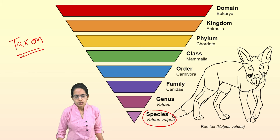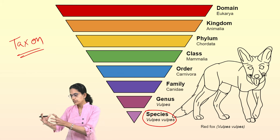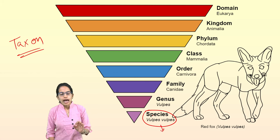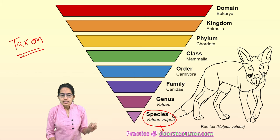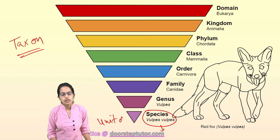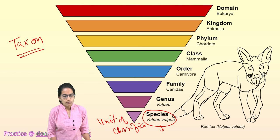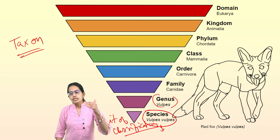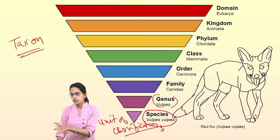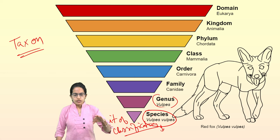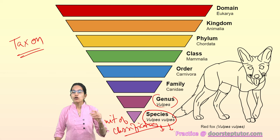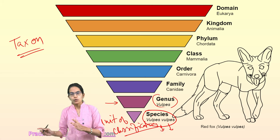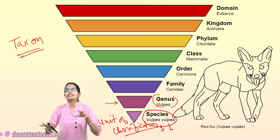The lowest taxon is the species. Species are groups of individuals which have the capability to breed among themselves, and therefore they have an interdependence within themselves. This is called the basic unit of classification. Next to species is the genus. The genus is where closely related species come together. For example, talking about a specific species like house crow — under genus, we would talk about house crow as well as jungle crow. Both are crows, but they have different traits.